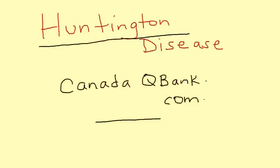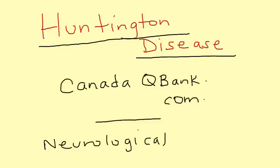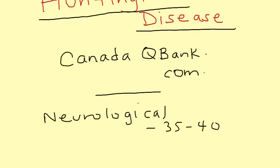The topic for this video is Huntington's disease, which is a neurologic disorder that occurs during middle age. Usually the onset is between 30 and 40 years of age. It is a genetically inherited disorder, and that genetic mode of inheritance is autosomal dominant — remember that, because it's commonly tested.